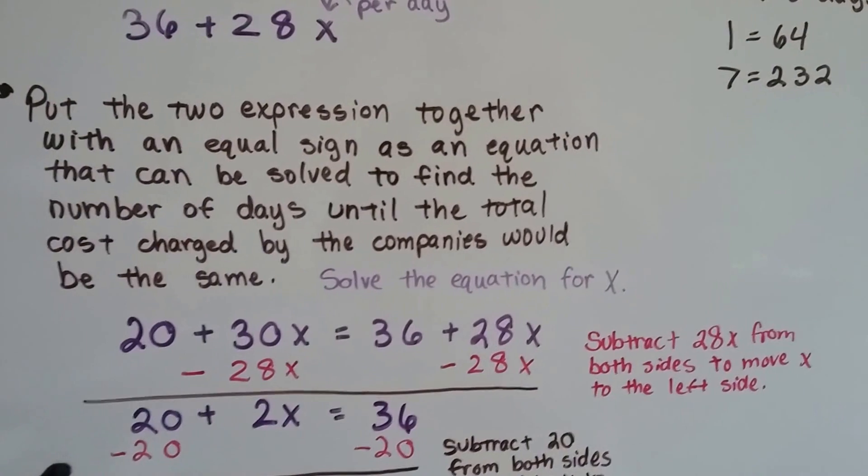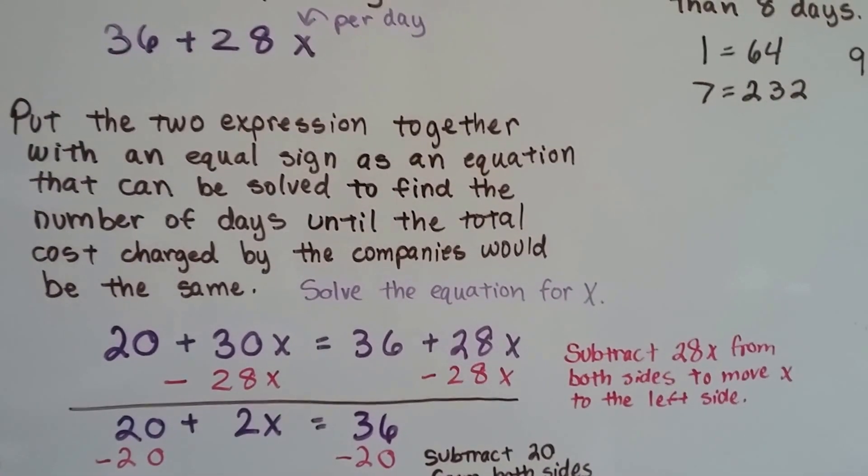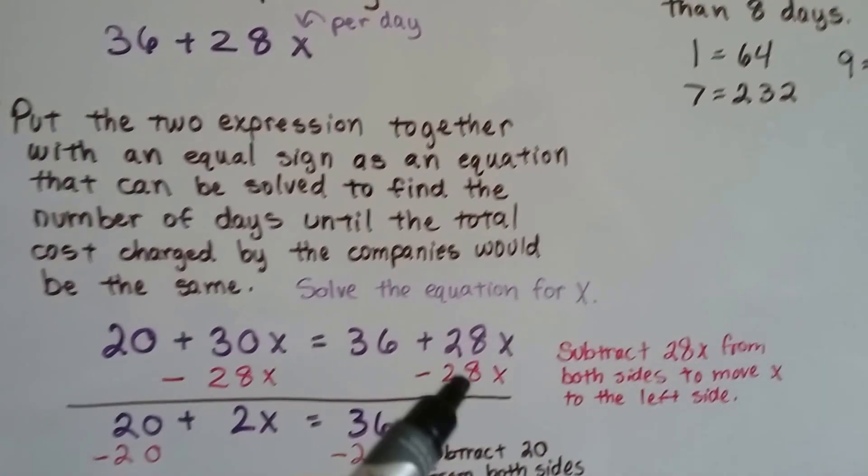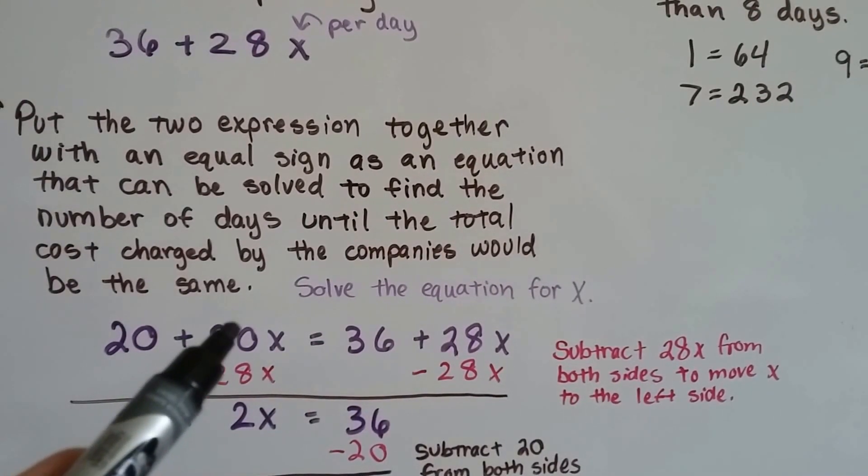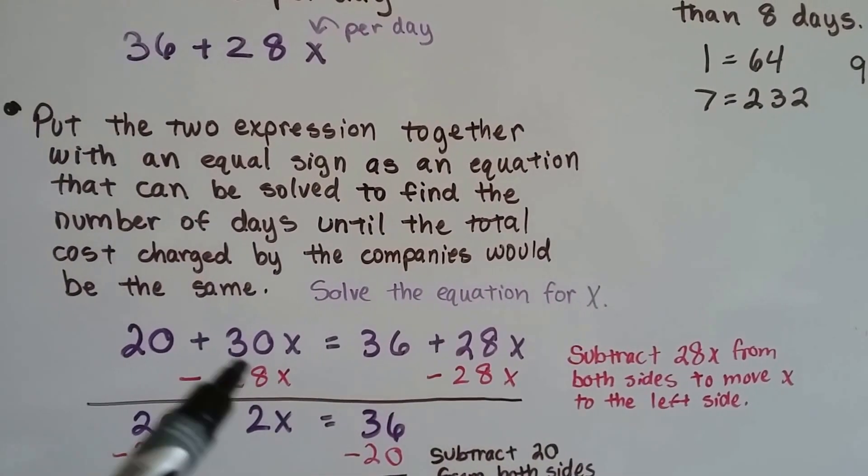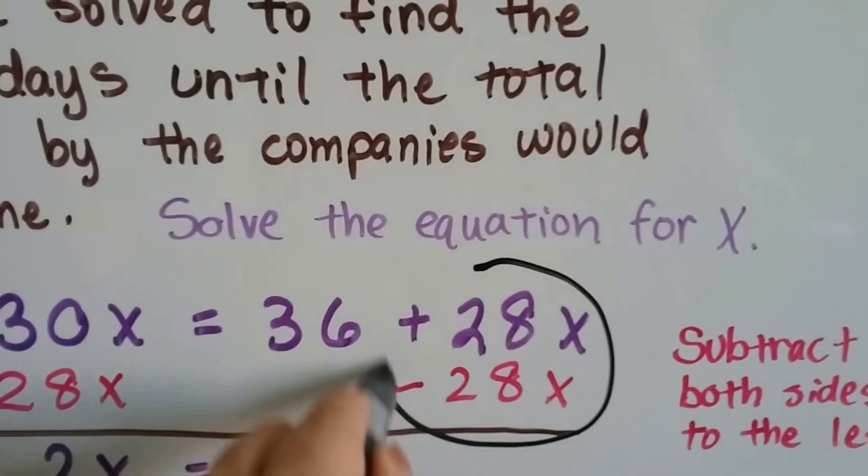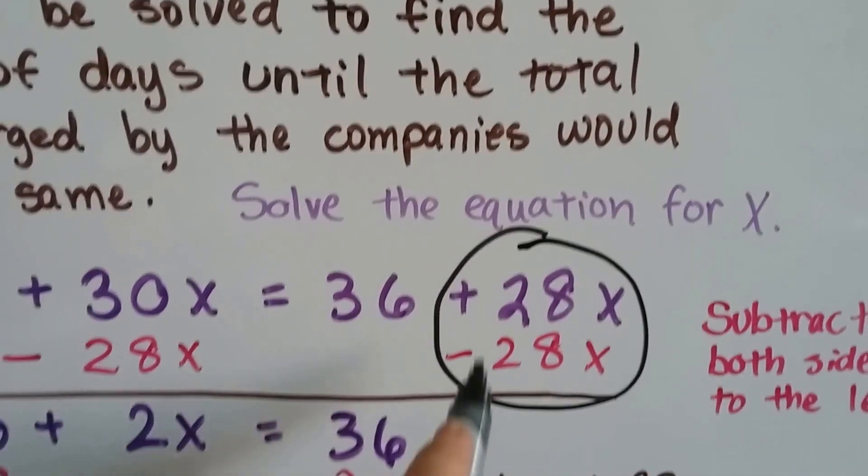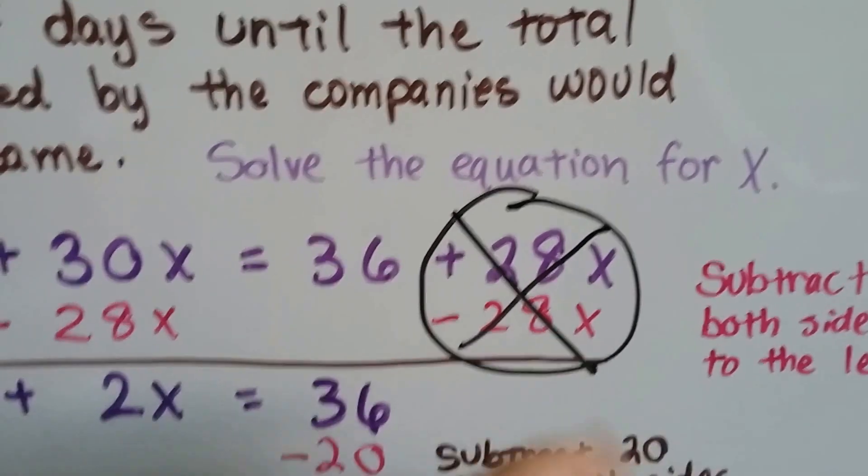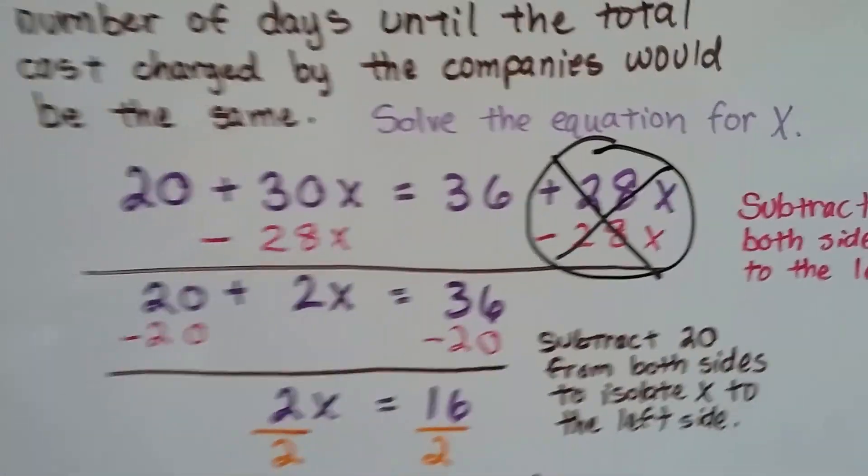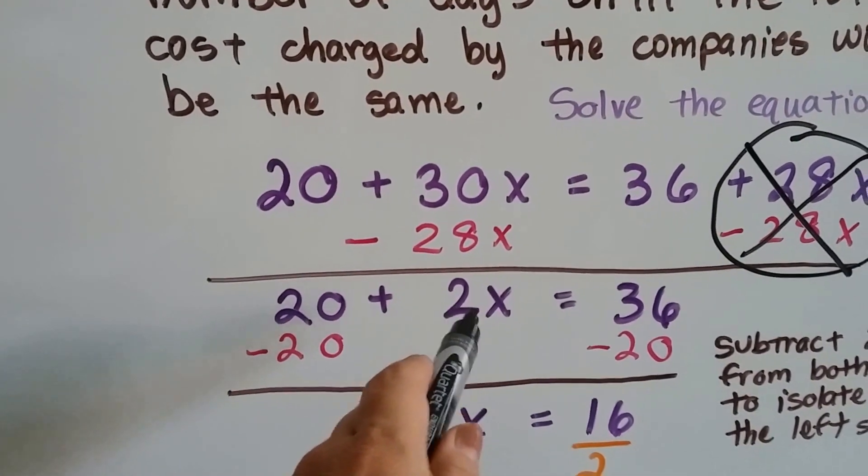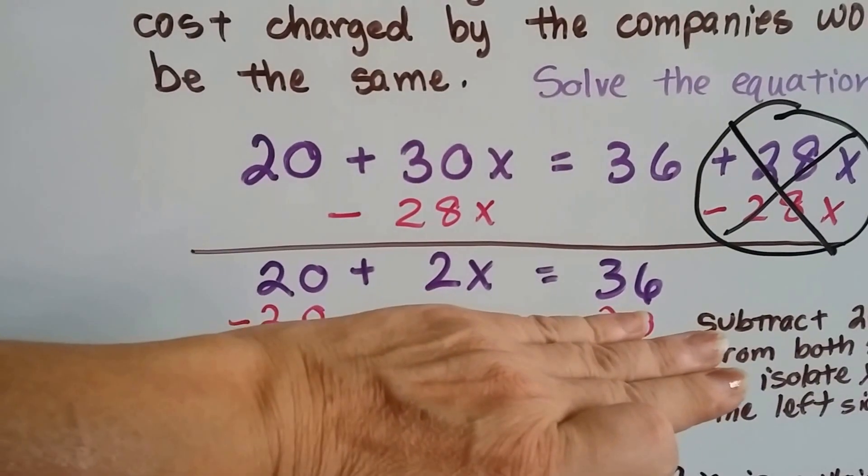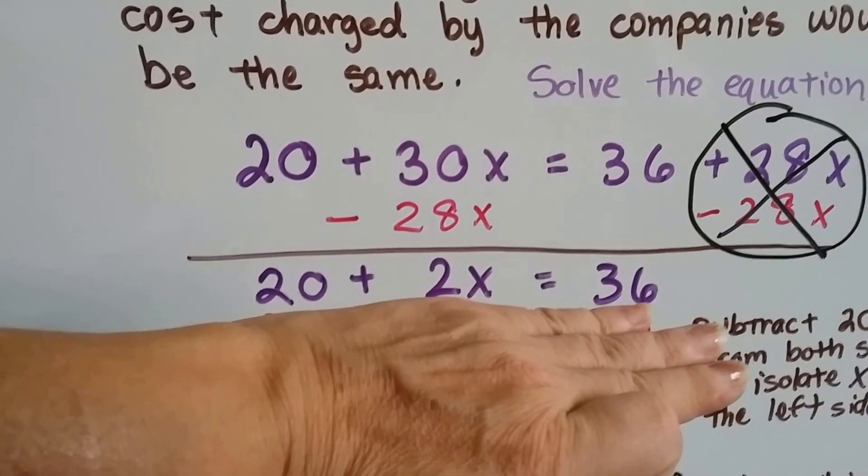The first thing we're going to do is try to get the variables to one side. Because there's a plus $28x here, and this one is a bigger $30x, we're going to take away $28x from both sides. That will create a zero pair here. A positive 28x minus a 28x will create a zero pair, and we'll be able to eliminate that. When we do minus 28x from this side, we're going to get a 2x. So now our equation says 20 plus 2x equals 36.